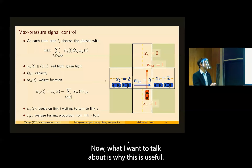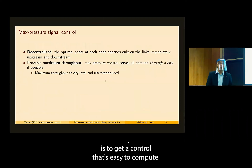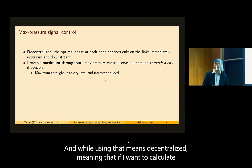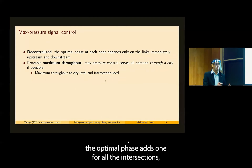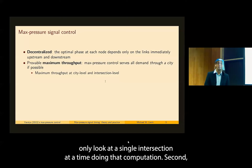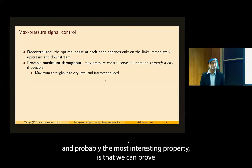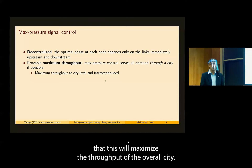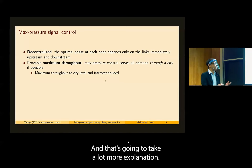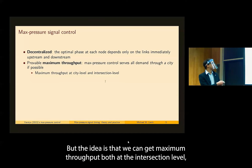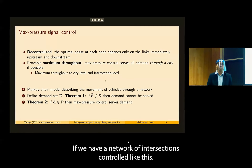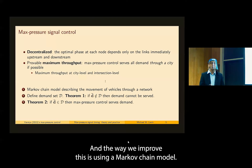The main goal is a control that's easy to compute. It's decentralized — meaning I can calculate the optimal phase for all intersections one intersection at a time, only looking at a single intersection during that computation. The most interesting property is that we can prove this will maximize the throughput of the overall city — how many vehicles can get through the network. We can get maximum throughput both at the intersection level and at the city level if a network of intersections is controlled like this. We prove this using a Markov chain model.